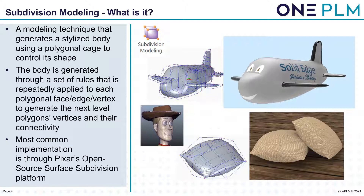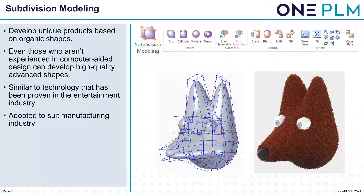The most common implementation is through Pixar's open source surface division platform, which you probably recognize from Toy Story. Subdivision modeling within Solid Edge is an intuitive, free-form modeling toolset that helps you develop unique products based on organic shapes. The technology makes it easy for anyone — even those not experienced in CAD — to work with sophisticated design software to develop high-quality, advanced shapes.